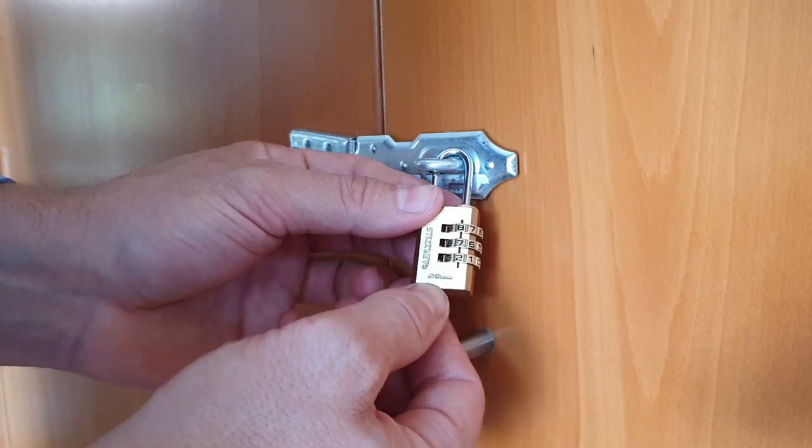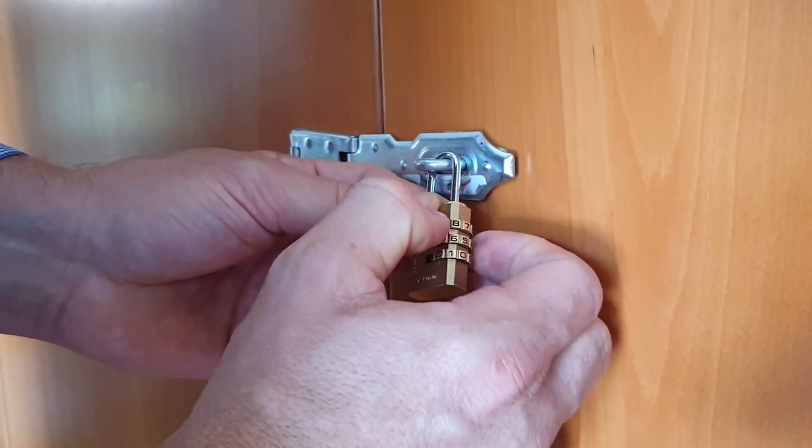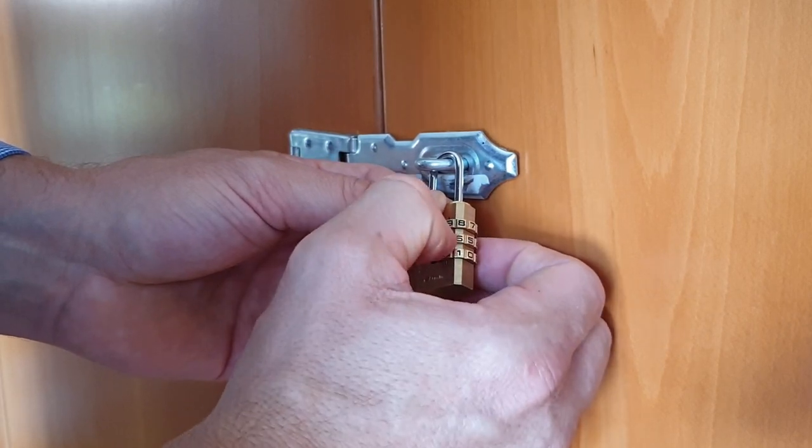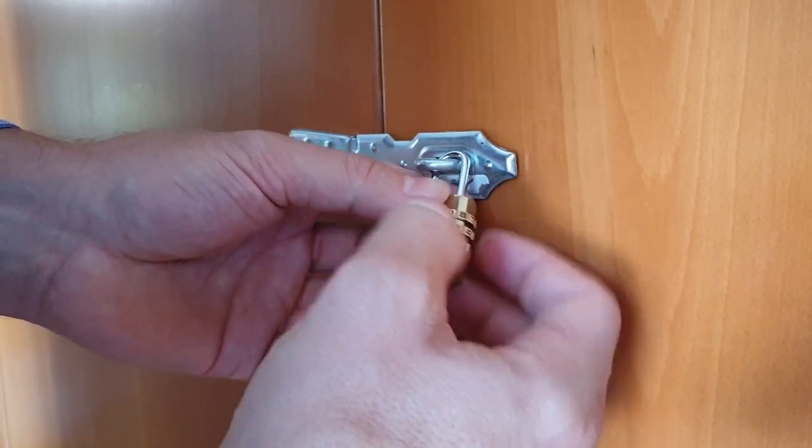Now you repeat the same process for the other 2 digits. You try to look for the digit which is harder to spin. In this case, this is the middle one.